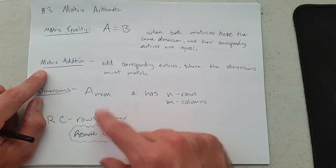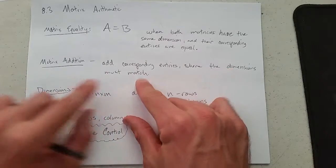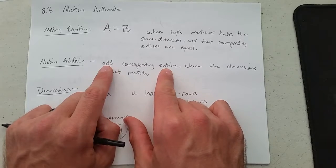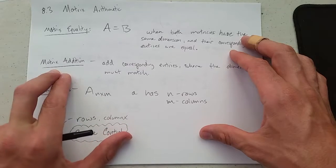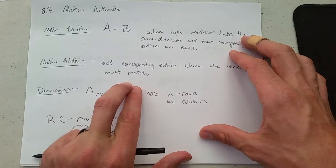Adding matrices is pretty easy to do. They need to have the same dimensions, and all you do is add the corresponding entries. We're going to do one example of this. Once you've done it a couple times, matrix addition is very straightforward.